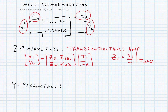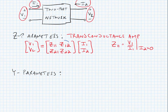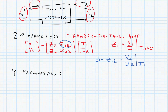Our feedback parameter beta is always defined by the 1,2 parameter. So in this case, beta is equal to Z12, and Z12 is equal to V1 over I2 when I1 is equal to 0. How do we make I1 or I2 go to 0? Well, currents are equal to 0 when they are driven into an open circuit. So if we keep port 1 open, then I1 equals 0; if we keep port 2 open, then I2 equals 0.